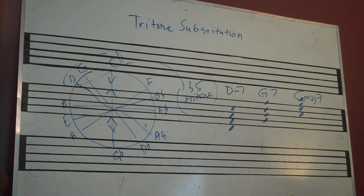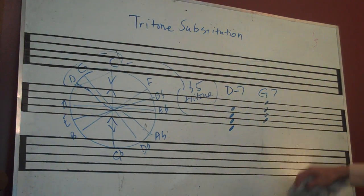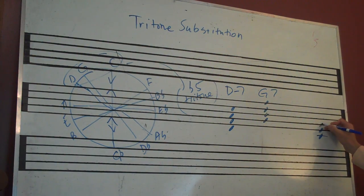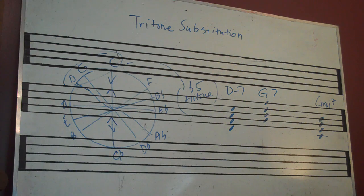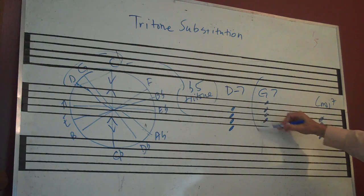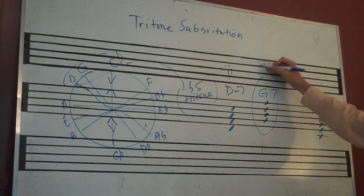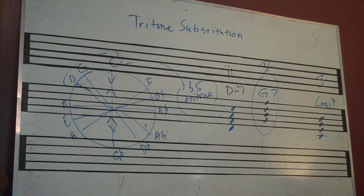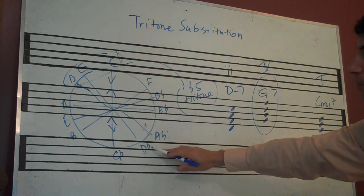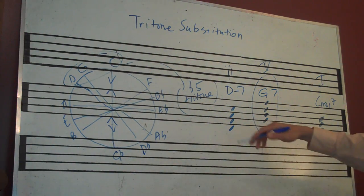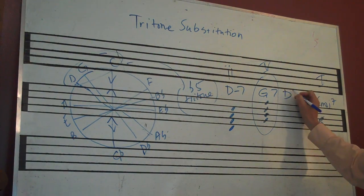Listen to it again. Now what we're going to do is erase this C major 7 chord and write it again to create a little bit of space. Now we're going to discuss what tritone substitution is. We're going to be talking about this dominant 7 chord. What we're going to do is replace this G dominant 7 chord with its tritone — D flat. So instead of G7, we're going to play a D flat dominant 7.